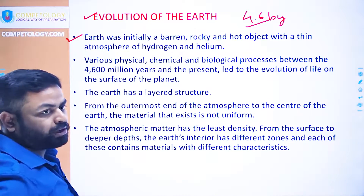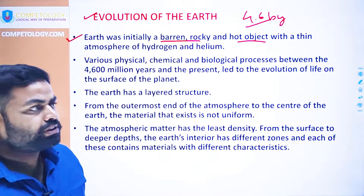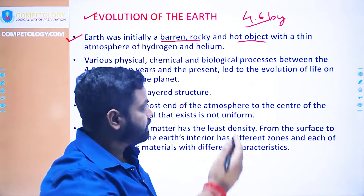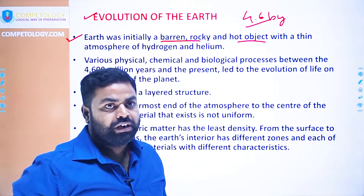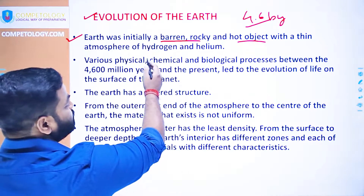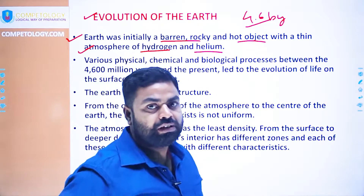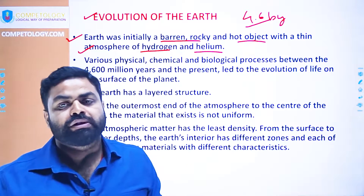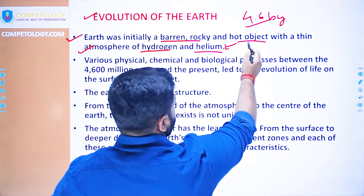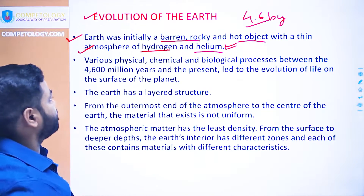Initially, the earth was a barren, rocky, red-hot object. As we know, during the Big Bang Theory the temperature was very high — even unimaginably high — and gradually the temperature came down. The earth was initially a very hot, rounded, barren object having an atmosphere of hydrogen and helium, which got wiped away due to solar winds and other factors.